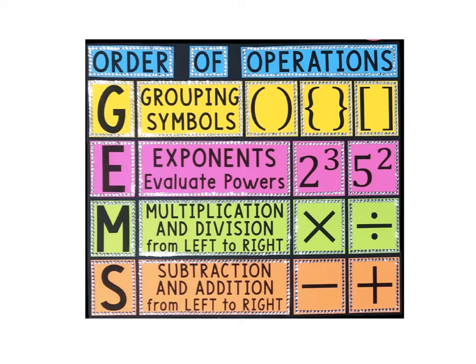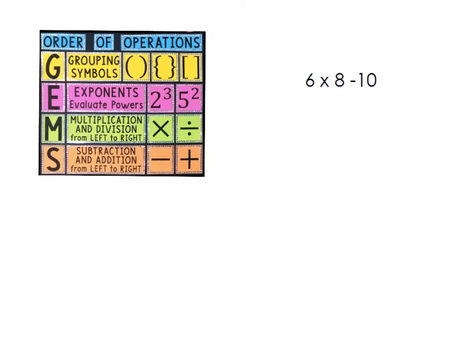Let's get into a problem so that you can actually see how this works. Alright, you can see off to the side, I still have the poster there so I can refer to that. The first thing that you're going to want to do when you're given an equation that has more than one operation, like the one on the right side of your screen, is first figure out what your operations are. We have two operations: multiplication and subtraction.